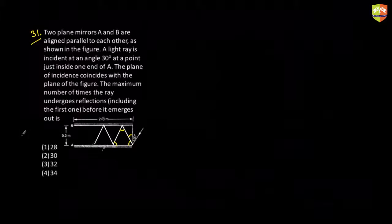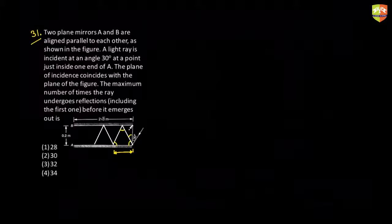Every time you'll get an equilateral triangle. You can see that each equilateral triangle is occupying this much length, which is equal to the side length of the equilateral triangle. Now how will you find that side length? I have this length here.